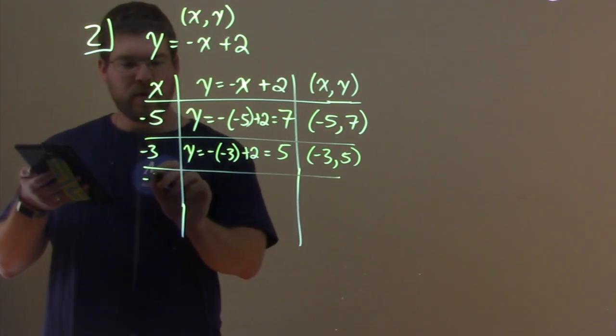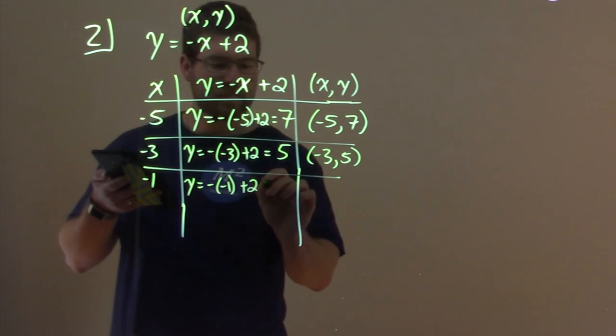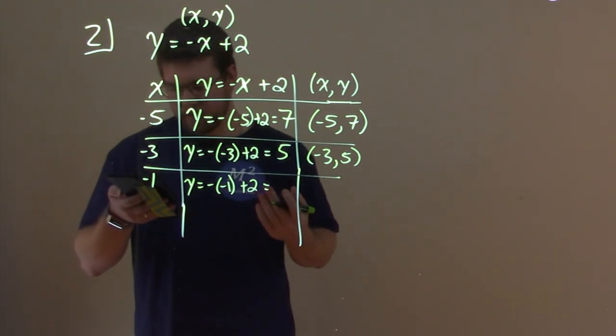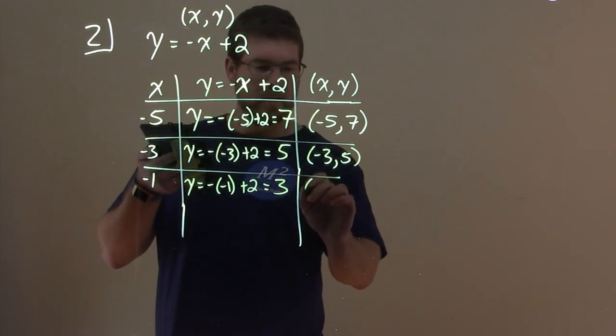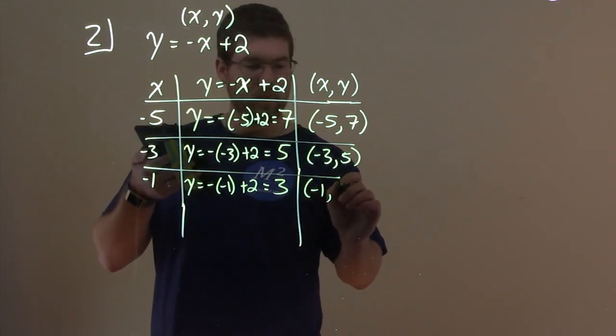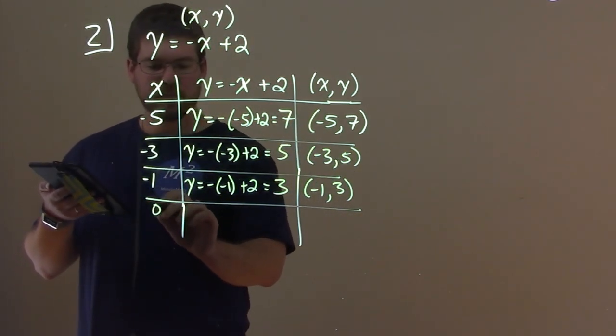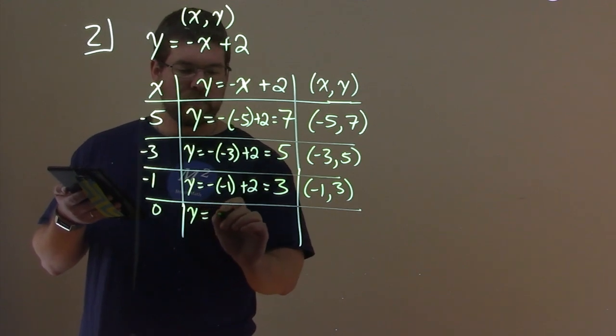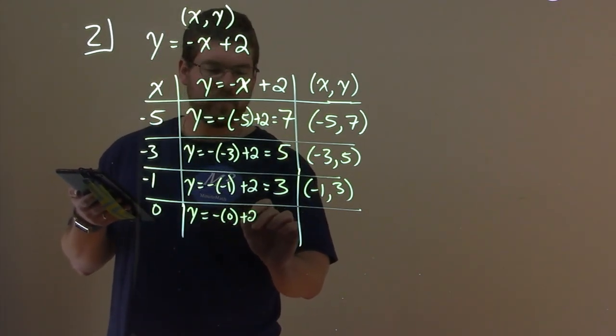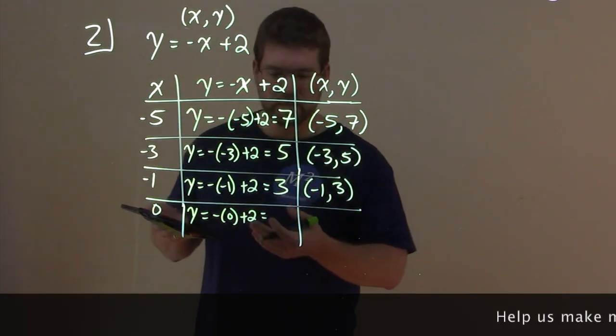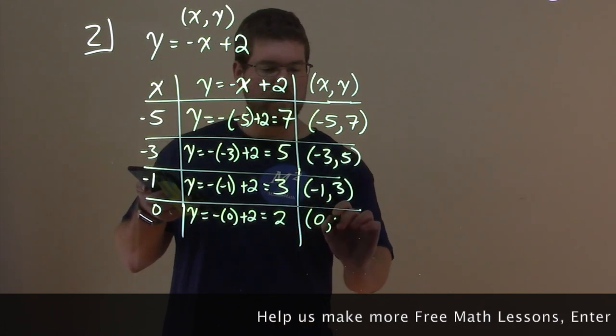Let's do another one, negative 1. y equals negative negative 1 plus 2. Negative negative is positive, so positive 1 plus 2 is 3. So we have the point negative 1 comma 3. Let's keep going. We have 0. y equals negative 0 plus 2. Can't really have a negative 0, just 0 plus 2 is 2. So the coordinate point is 0 comma 2.